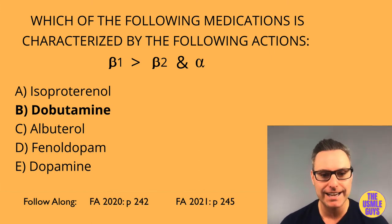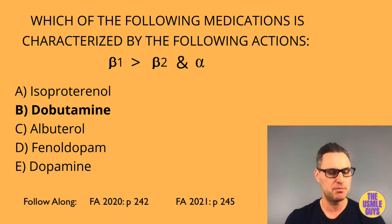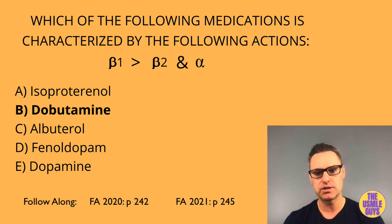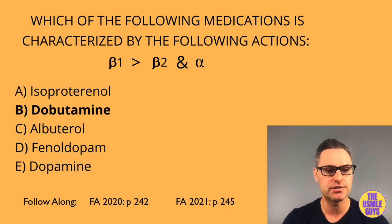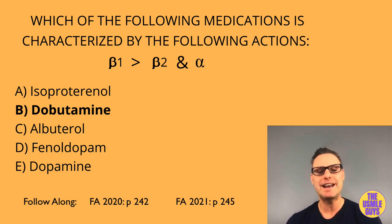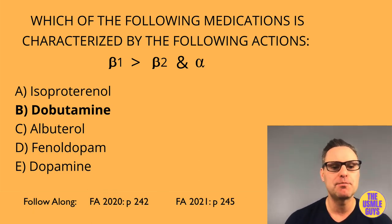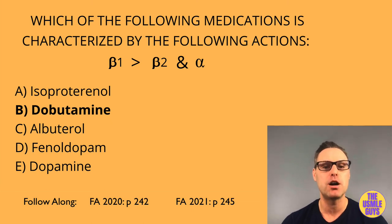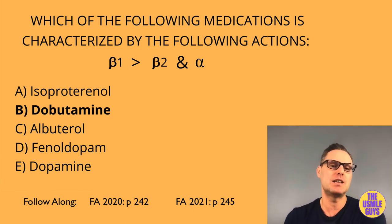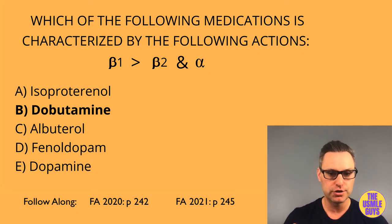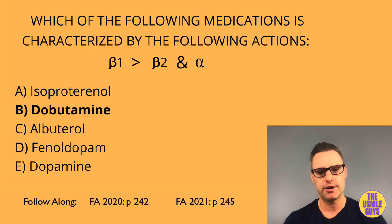Fenoldopam is a D1 receptor agonist used post-op for hypertension and in hypertensive crisis — it causes vasodilation and promotes natriuresis but can lead to hypotension and tachycardia, so use cautiously. Isoproterenol affects beta-1 and beta-2 equally and can be used in asthma, emphysema, and bronchitis, and causes relaxation of GI and uterine smooth muscle. Midodrine is an alpha-1 receptor agonist used in autonomic insufficiency and postural hypotension. Mirabegron is a beta-3 receptor agonist used in urinary urgency, urinary incontinence, and overactive bladder.